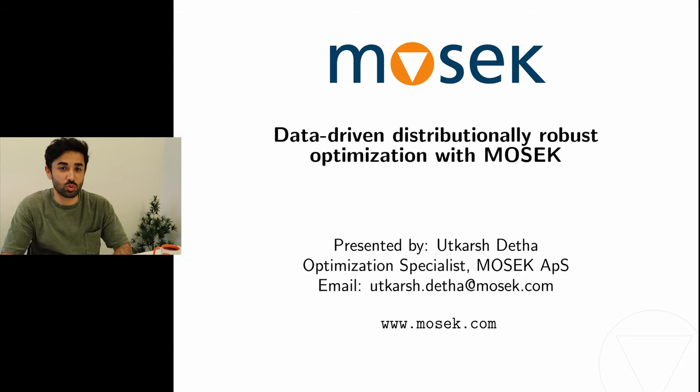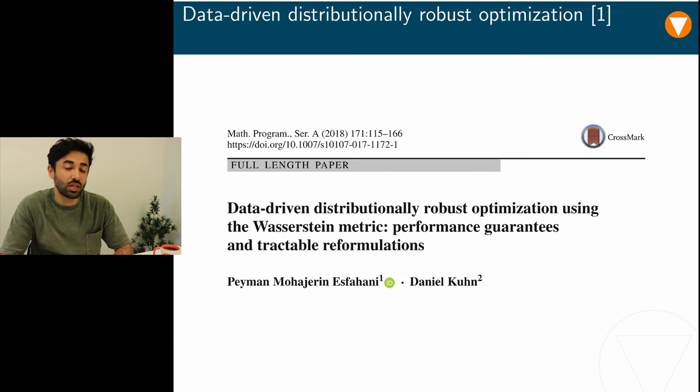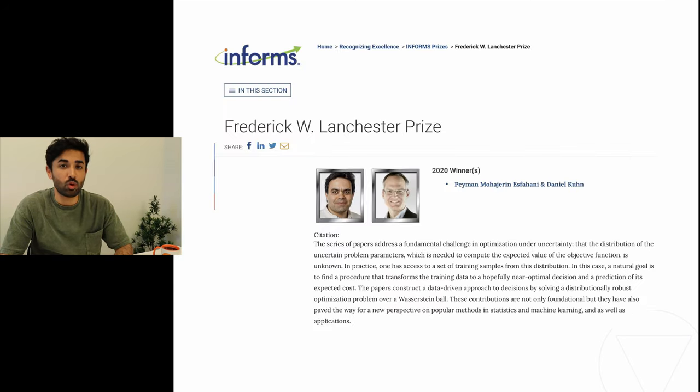Hello and welcome to this video lecture. I'm Utkarsh and I work as an optimization specialist at Mosek APS. In this video I will be discussing distributionally robust optimization. Specifically, I will be covering the ideas and models presented in the research paper titled Data-Driven Distributionally Robust Optimization using the Wasserstein Metric Performance Guarantees and Tractable Reformulations, which was authored by Assistant Professor Payman Mohajirin Esfahani from Delft University of Technology and Professor Daniel Kuhn from EPFL. This paper was awarded the Frederick W. Lanchester Prize in 2020 by INFORMS.